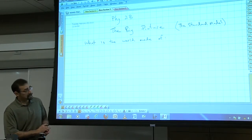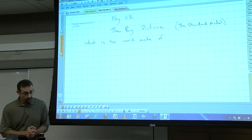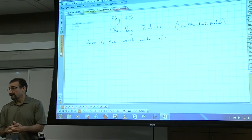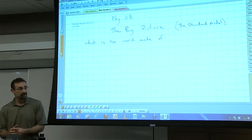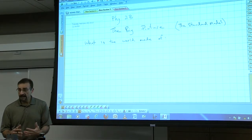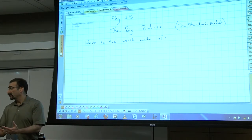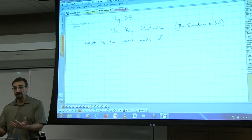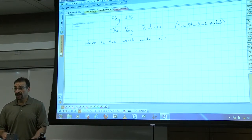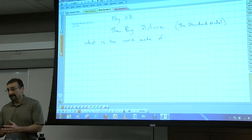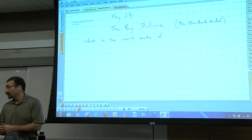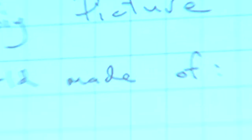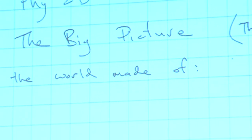We have what we call the Standard Model. What's the world made of? We have what we call fundamental particles — that means we can't break them open and find smaller particles inside them. Maybe years ago, the fundamental particle believed was a molecule, and things were thought to be made up of molecules. Then we figured out we could break molecules up into atoms, and for a while atoms were thought to be fundamental.